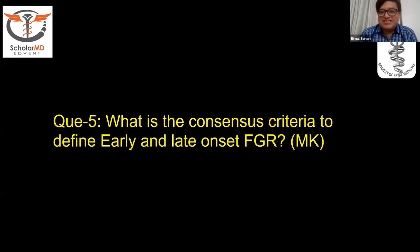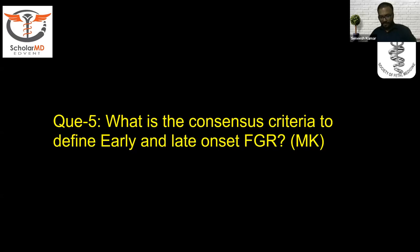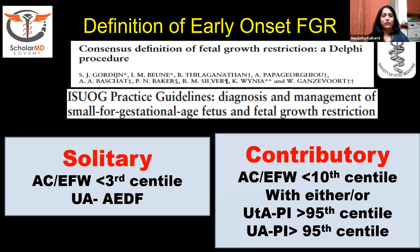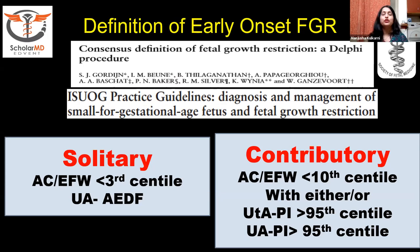We have the clear Delphi consensus criteria, also followed by ISUOG practice guidelines. For early onset fetal growth restriction, a solitary criterion is: AC or estimated fetal weight less than 3rd centile, or umbilical artery showing absent end-diastolic flow. A contributory criterion is: AC or estimated fetal weight less than 10th centile with either uterine artery PI more than 95th centile or umbilical artery PI more than 95th centile.